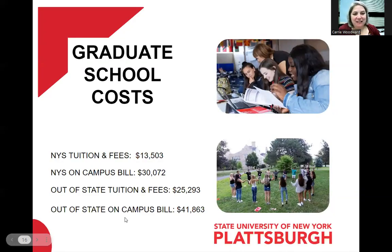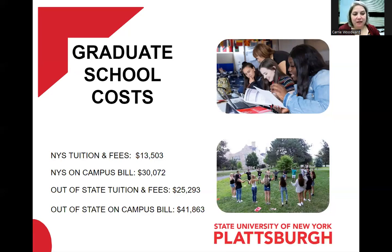As a SUNY institution, tuition is set by SUNY at the state level. For New York state residents, tuition and fees are about $13,500 a year; if you live on campus the total cost is $30,000 a year. Out-of-state tuition and fees are higher. However, don't be intimidated by these numbers — there are quite a few financial aid opportunities in this program. For students from out-of-state who are selected for an assistantship, out-of-state tuition can be waived on a case-by-case basis, and we hope that continues into the future.